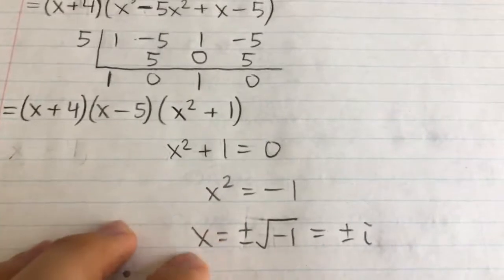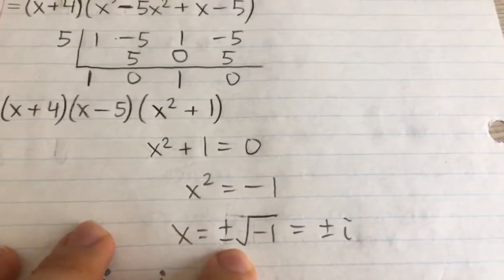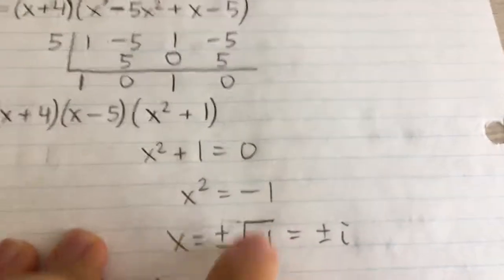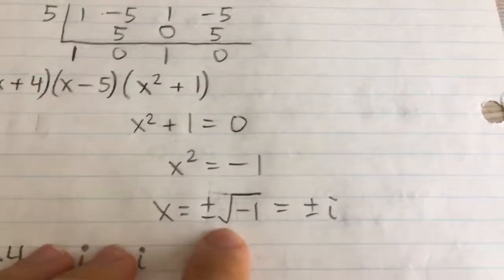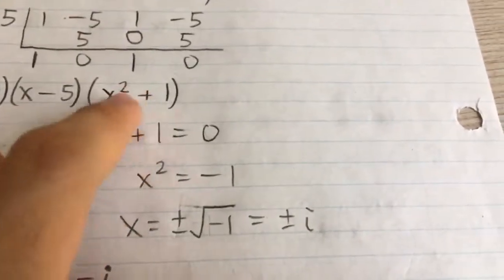When we solve for x, you subtract 1 from both sides and take the square root of both sides. Don't forget that when you take the square root of both sides, it's plus or minus the number on the right. And the square root of negative 1 is i, and so it's plus or minus i. That's the two solutions we get from this factor.